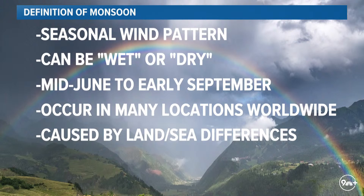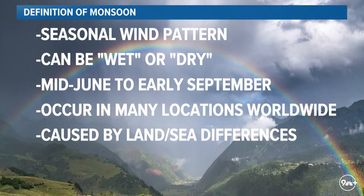The monsoon goes from mid-June to early September. We're getting off to a late start this year, and I'll explain why in just a second. It can occur in many locations across the world. The most famous monsoon outside of the North American monsoon — which is the one that impacts us here in Colorado — is the one in India, which provides a ton of rain out in South Asia this time of year.